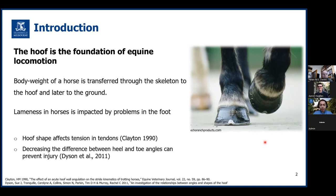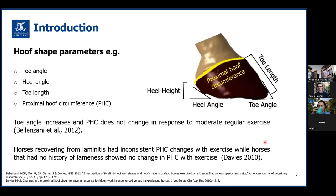Studies show that the hoof shape affects tension in tendons and consequently influences the soundness of equine locomotion. A more recent study showed that decreasing the difference between heel and toe angles can prevent equine injury. Belenzani showed that the mean toe angle of horse limbs increased during moderate exercise. However, PHC or proximal hoof circumference did not. Similar findings showed that horses with no history of lameness had no change in PHC with exercise, but horses recovering from laminitis had inconsistent PHC changes with exercise.